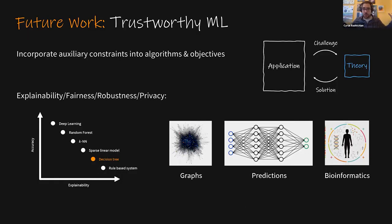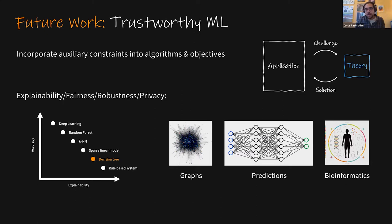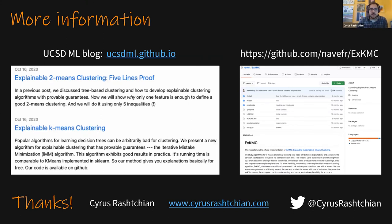Stepping back, I think this area of trustworthy machine learning is super important. In addition to clustering, there are graph problems, classification, and applications where all of these areas have key technical challenges leading to a rich theory about how to design better algorithms that are explainable, fair, robust, or private. They're also very useful in practice because now that machine learning is being used for human-centered applications, we want more from our algorithms. I'll end with two links: a blog I help edit with short posts on our algorithms and proofs, and a GitHub link for our code. Thank you, and I'm happy to take any questions.